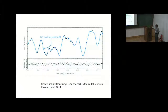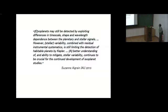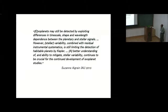The data on stellar activity and planets is like a hide and seek — we see trend as well as some kind of periodicity and need to separate them, with very high noise levels. During the IAU meeting in 2015 in Hawaii, Suzanne Aigrain expressed that exoplanets may still be detected by exploiting differences in time scales, shape, and wavelength dependence between planetary and stellar signals. However, stellar variability combined with residual instrumental systematics is still limiting the detection of habitable planets by Kepler, and better understanding of stellar variability is crucial.